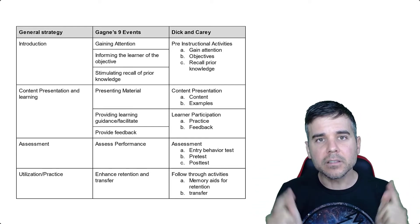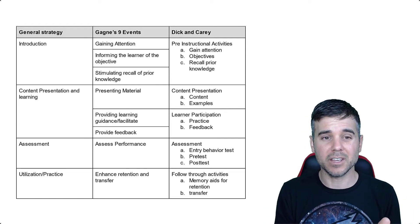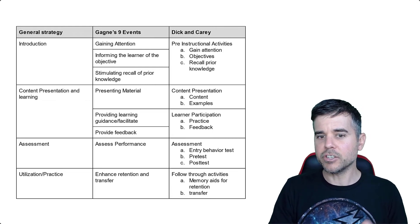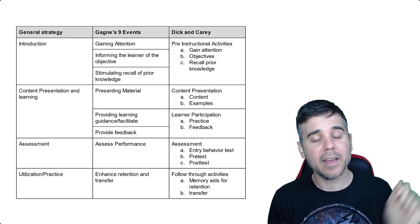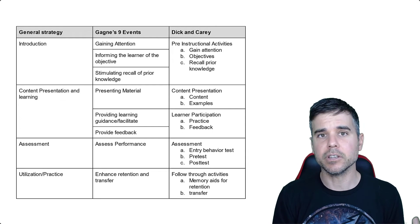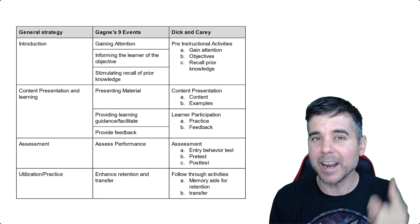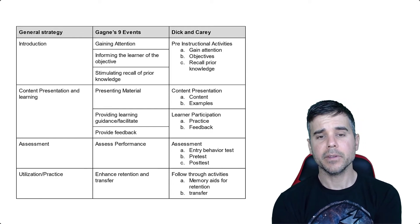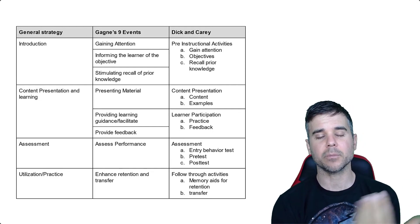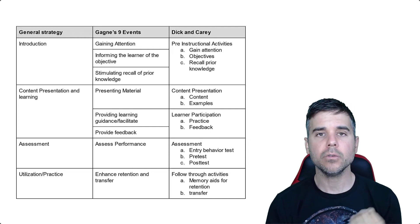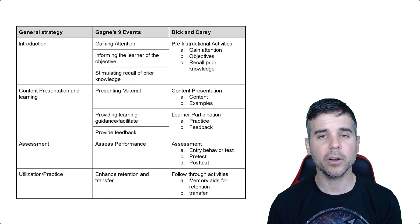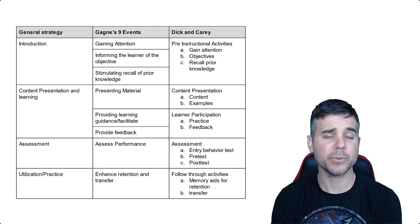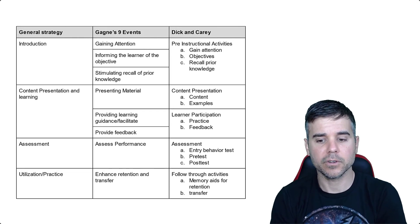A lot of what I see when I say bad training is that there isn't that 'get them to learn' component. A lot of people have skipped the delivery strategies and just presented content. If I'm just presenting someone content, I might as well hand them an encyclopedia article and say read this. After we've done that part, we assess them to make sure they can do it. Gagné described this as assess performance, and Dick and Carey described this step as a pre-test post-test. I like the pre-test post-test because we can gauge responses pre and post. Finally, how did we enhance retention and transfer? Dick and Carey described this as memory aids for retention and transfer.